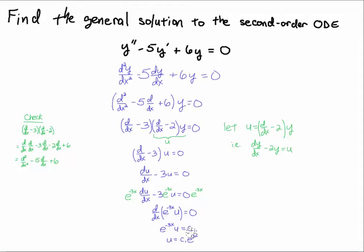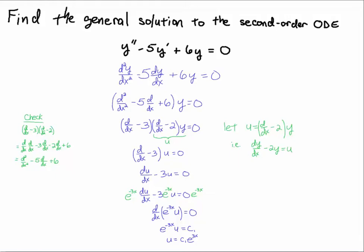Now I'll take this u and input it into the right-hand side of the secondary differential equation dy/dx − 2y = u = c₁e^(3x). Notice we already have one of the solutions to the ODE — from the previous video, c₁e^(3x) is already a solution. Now I'll solve this secondary ODE using an integrating factor e^(−2x).